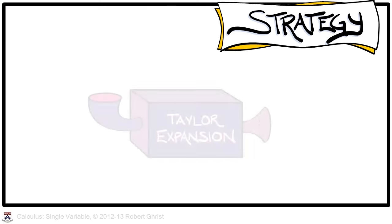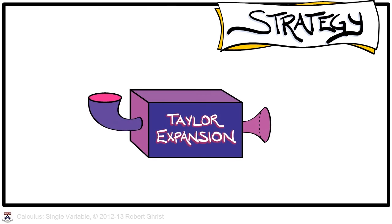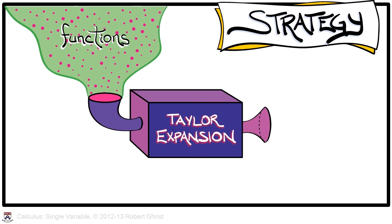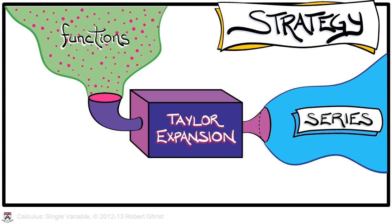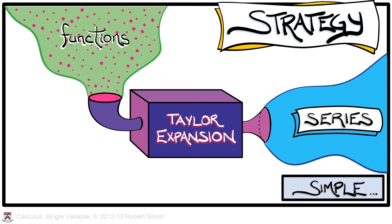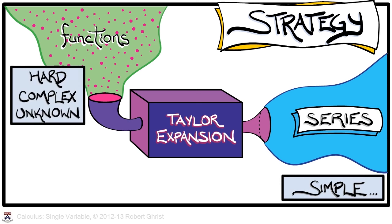Our strategy, therefore, for working with functions is to think of Taylor expansion not as a function itself, but as something like an operator — something that takes as its input a function and returns as its output something that is in the form of a long polynomial, or better, a series. Why do we want to do this? Series, thought of as long polynomials, are very simple to work with, whereas some functions can be obtuse, very difficult, maybe even unknown in a specific form. Taylor expansion helps us to convert such objects into an easier-to-work-with form. Indeed, some functions really can't be defined well except as a Taylor series.